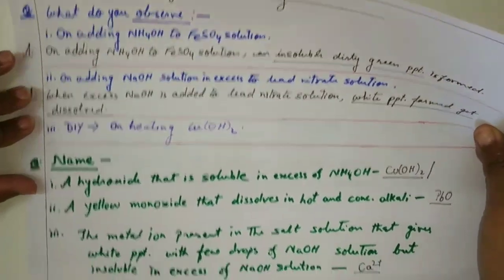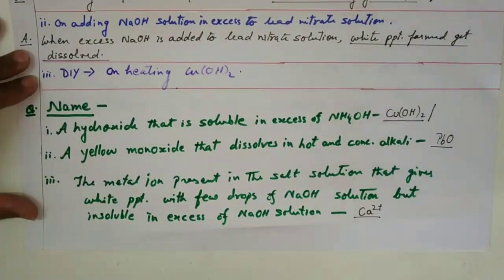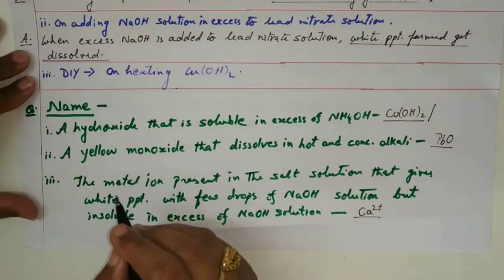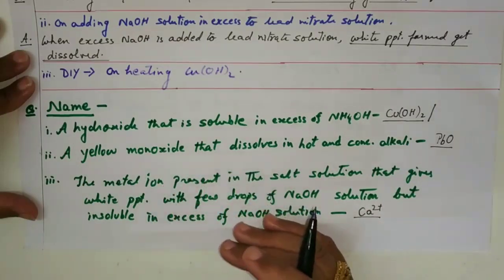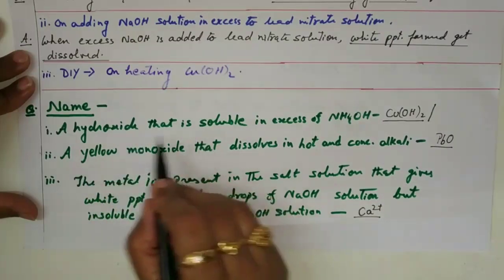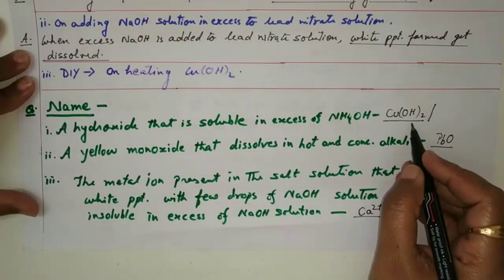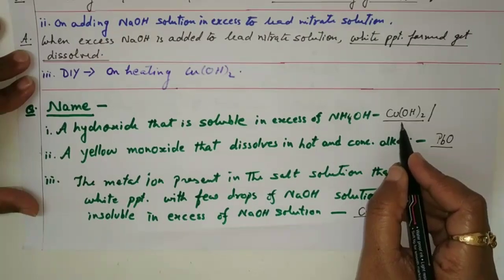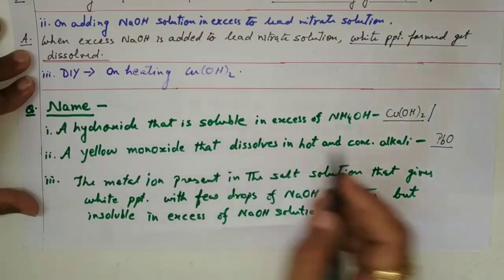The next type of question is the 'name' type, where you have to name a gas, a compound, a substance, or a precipitate. For example: name a hydroxide that is soluble in excess of ammonium hydroxide. The answer is copper hydroxide, because copper salt with few drops of sodium hydroxide gives a pale blue precipitate of copper hydroxide, which dissolves in excess of ammonium hydroxide. The second question: name a yellow monoxide that dissolves in hot concentrated alkali — the answer is lead oxide.